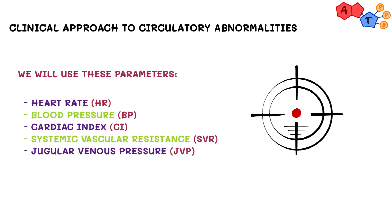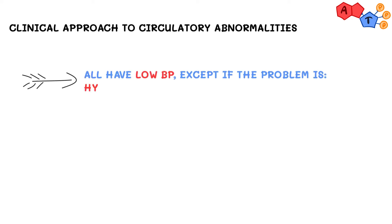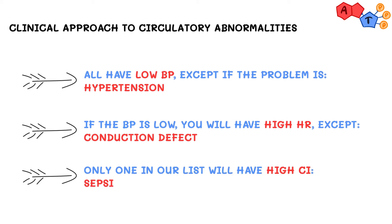Using these parameters, we will identify where the problem is and then suggest the optimal treatment. Before we get into our table, remember these three exceptions: all the abnormalities we will discuss will have low blood pressure except for one caused by hypertension. If we have low blood pressure, we will always have reflex tachycardia, except if we have a conduction defect.